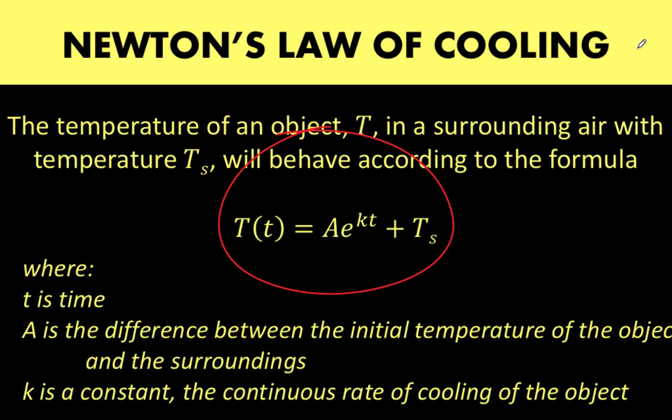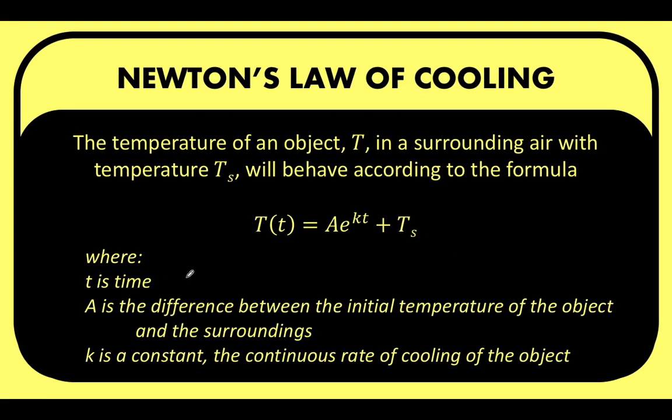Where small letter t is the time in seconds, A is the difference between the initial temperature of the object and the surroundings.